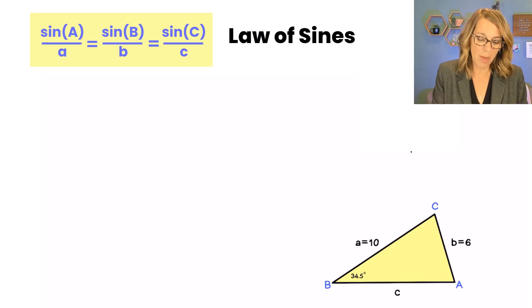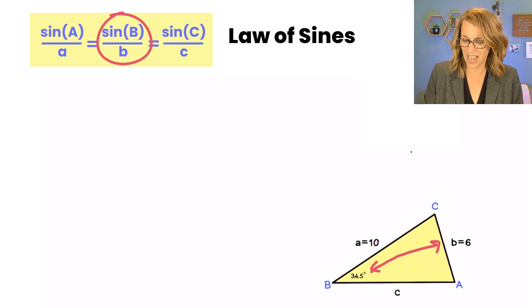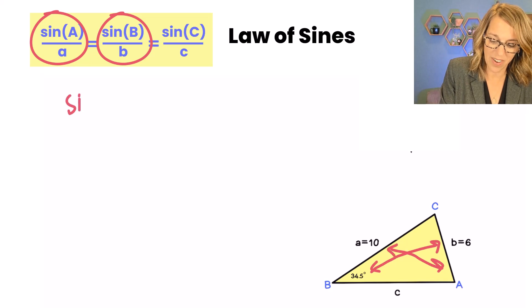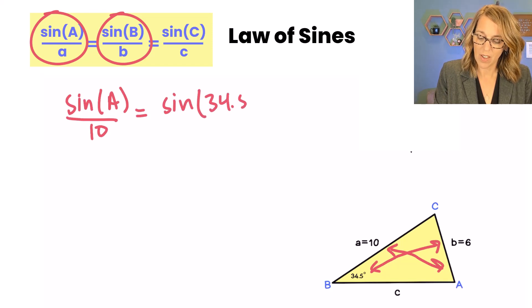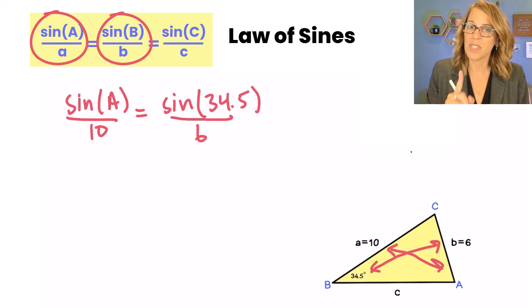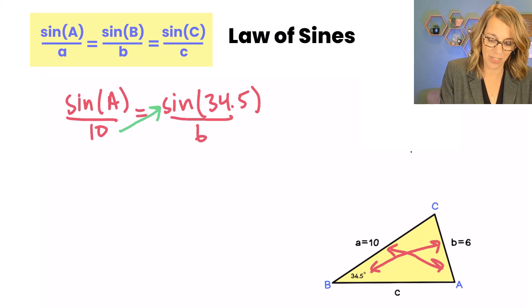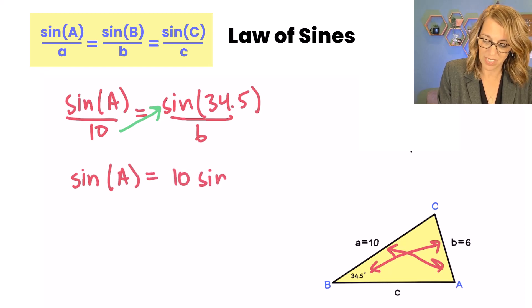Applying the law of sines, I want to pick up a side and an angle across from each other. So I want angle B and side B, and the only other piece of information I know is side A, so I need side A and angle A. Putting this together in our law of sines: sine of A over side A (which is 10) is equal to the sine of angle B (which is 34.5) over side B (which is 6).